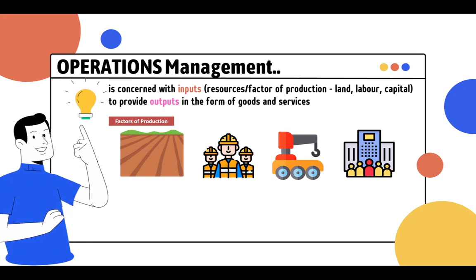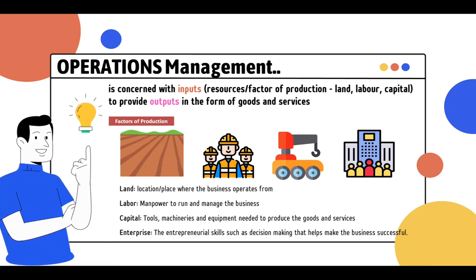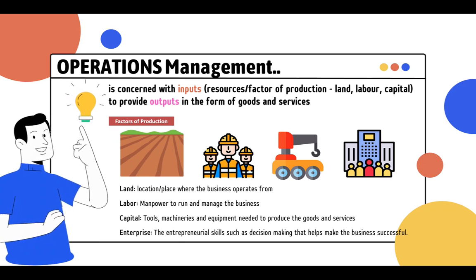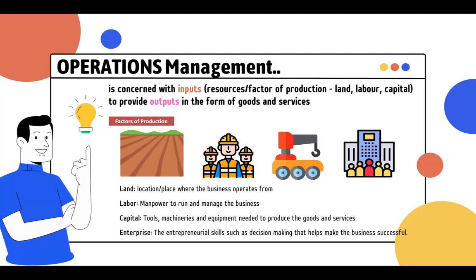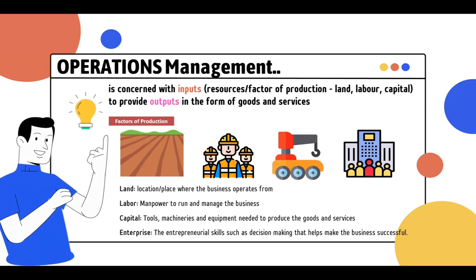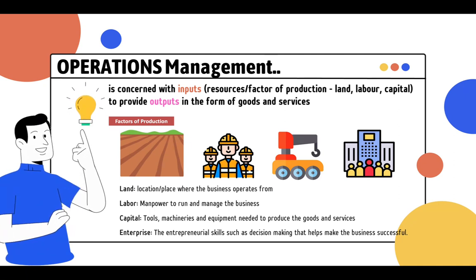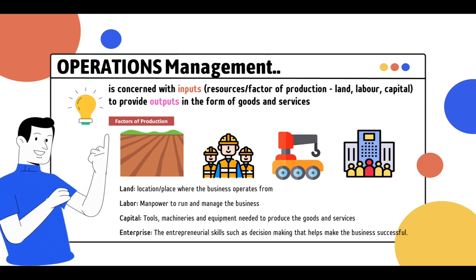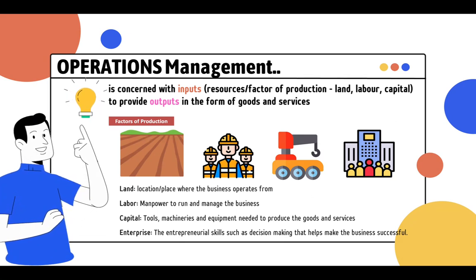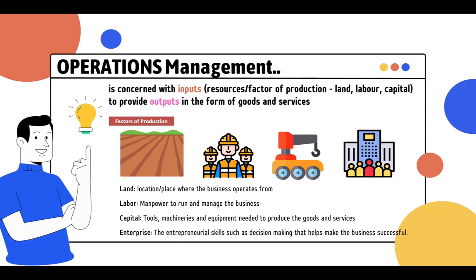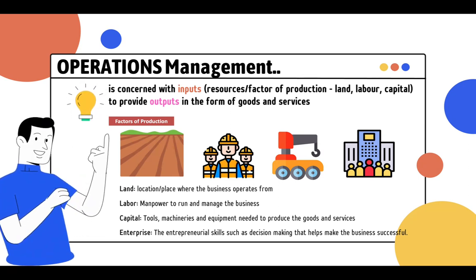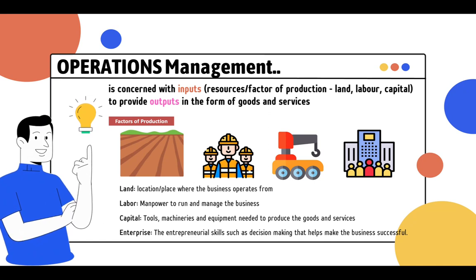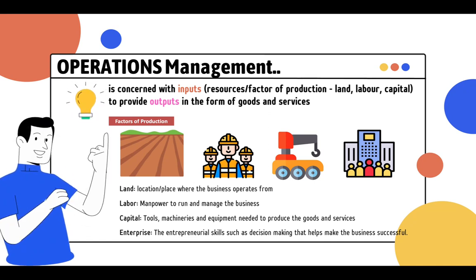Factors of production concern four areas: land, labor, capital, and enterprise. Businesses require these factors in anything they want to do. You need land — a place where the business operates from. You need labor — people, even if it's just a one-man show. You need capital — tools or machines to make goods or services. And you need enterprise — the entrepreneurial skills and decision-making to ensure whatever you produce helps your business grow.